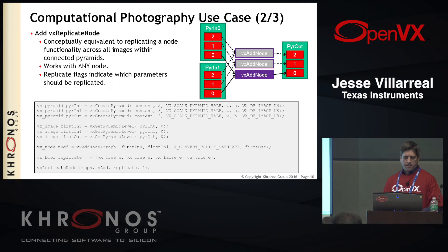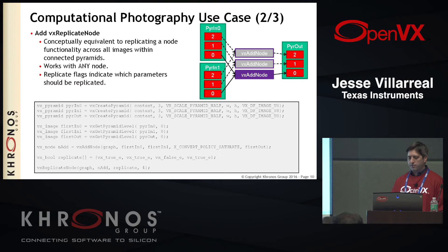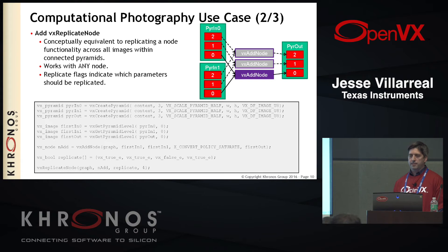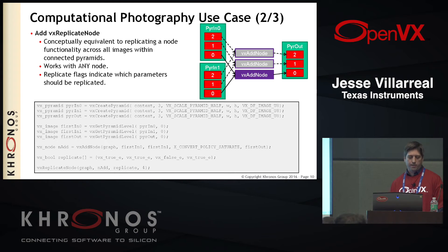So looking here, if you have two input pyramids that each have three different levels and you have your associated output pyramid, you would first have a function to get level zero from the inputs and get level zero from the output, then create your VX add node passing those different references to it — and you'd have to do the same thing for the other levels as well. What we've added is a helper function to make things a little bit simpler for the user interface: VX replicate node. It conceptually does what I just described manually. Internally it may or may not do this — it's up to the implementation to figure out if it can do some optimizations. But at least conceptually you can get the idea, which is why we called it VX replicate node.